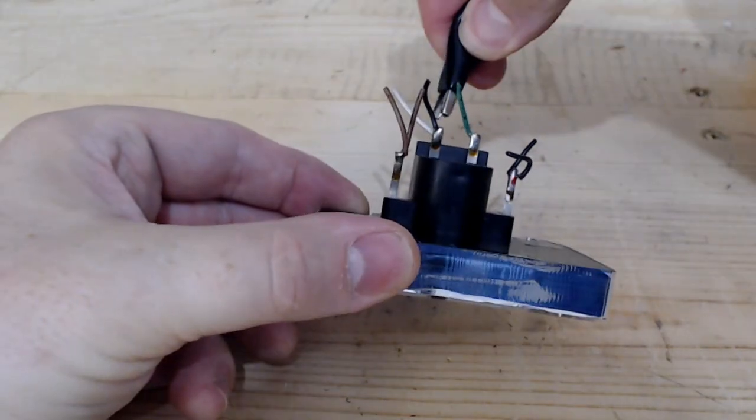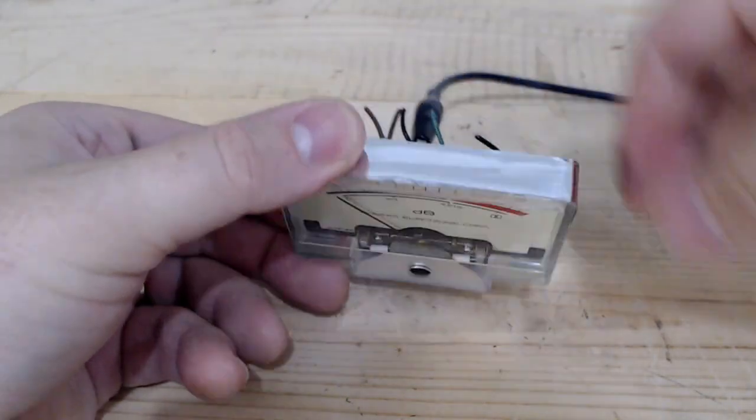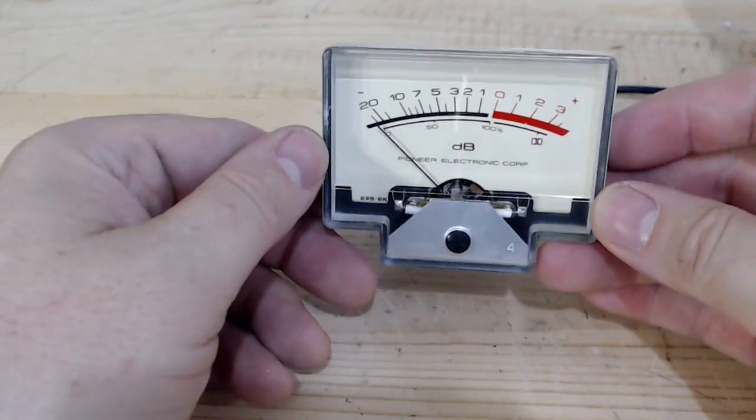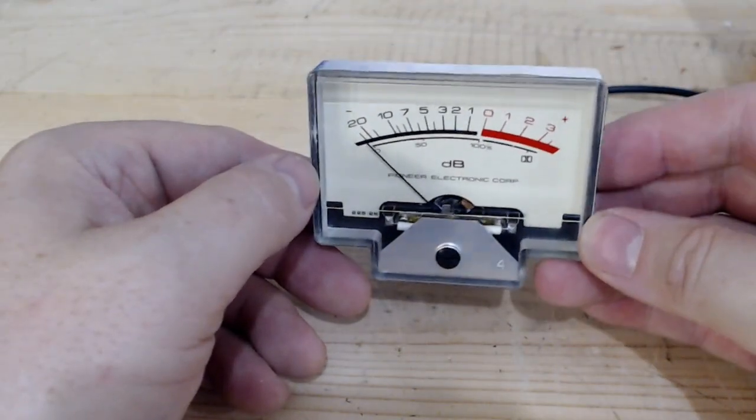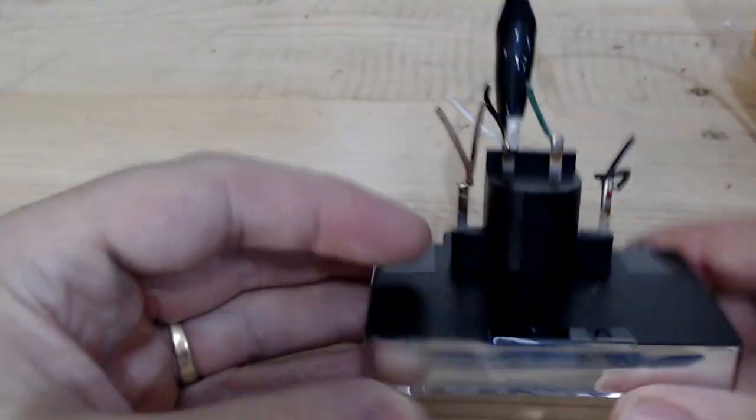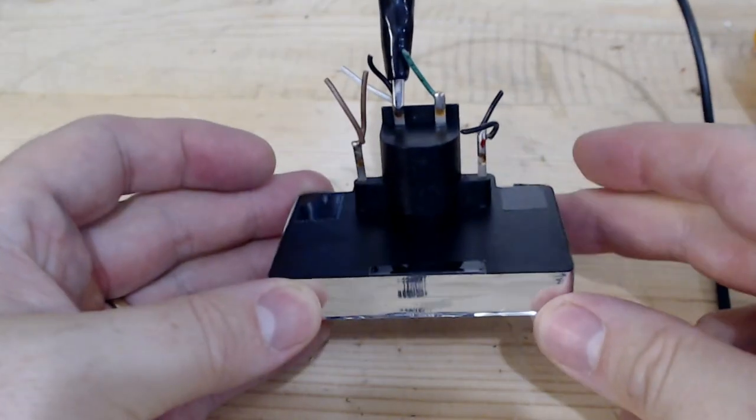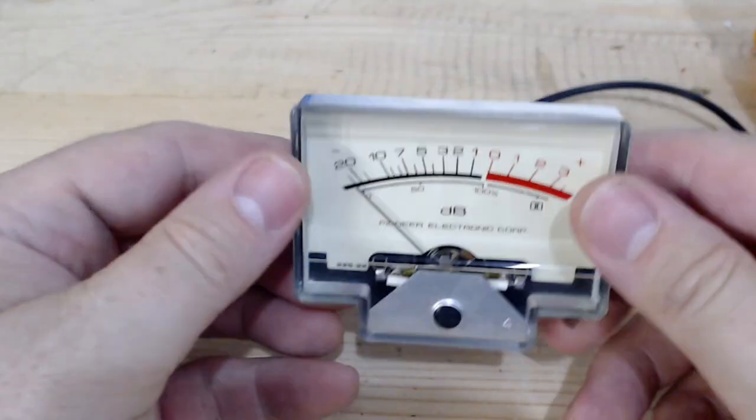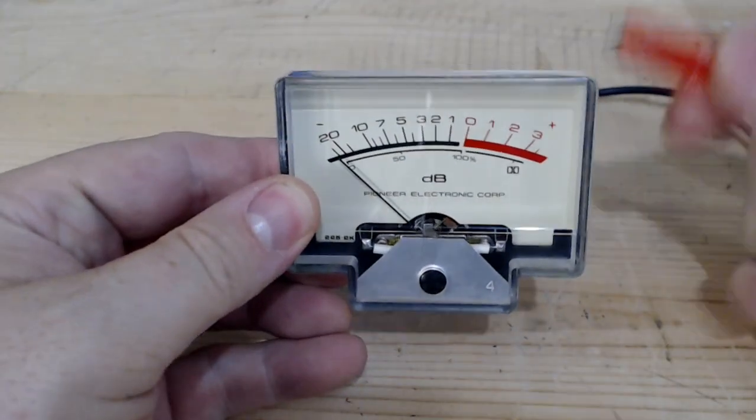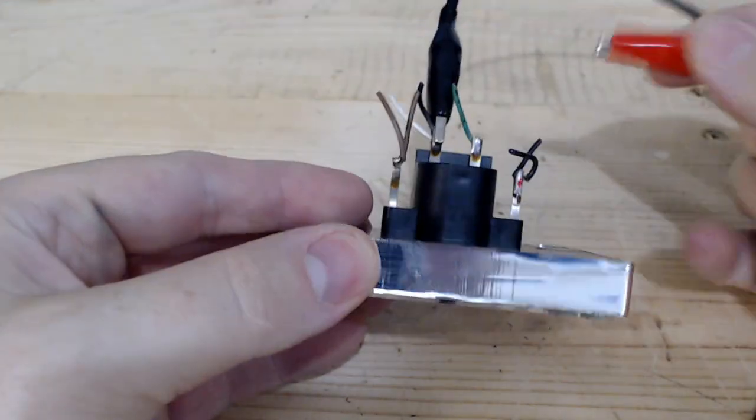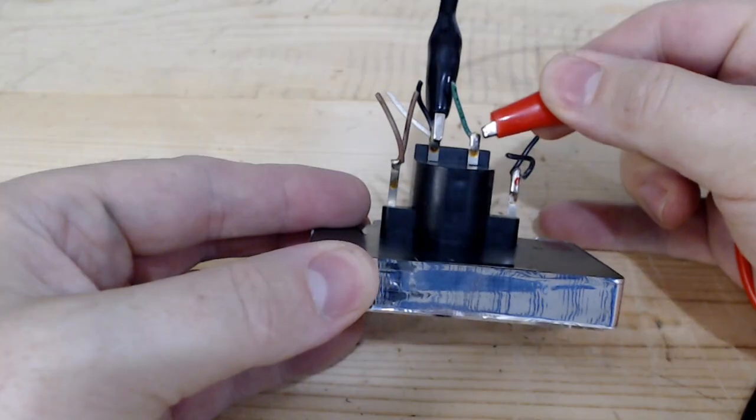I'll take the black lead—this is from a Pioneer CTF 1000, maybe 700, something like that. I'm going to take the black lead and go to that black and white wire for this meter. Then I'm going to take the red lead and touch this post here, and we should see the meter jump.